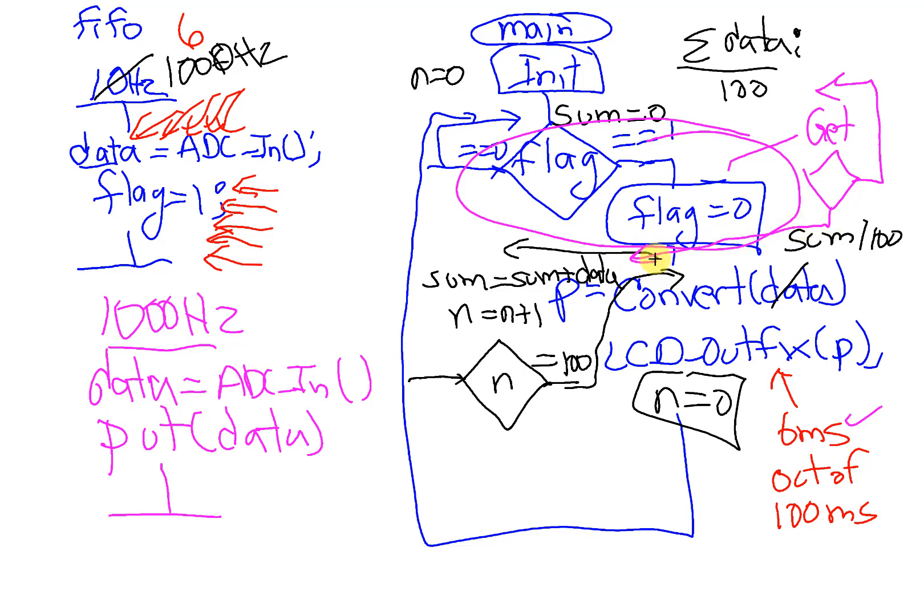So I can use this FIFO producer consumer problem, where this is producing the data and this main program is consuming the data. This is a classic example of using queues. It's exactly like going to the grocery store. If the clerk is busy, you'll get in line.